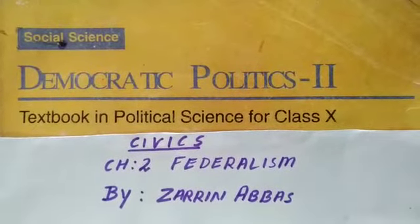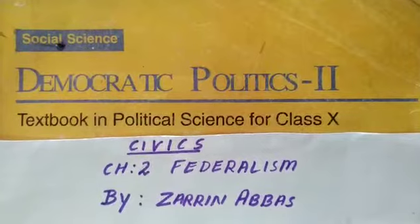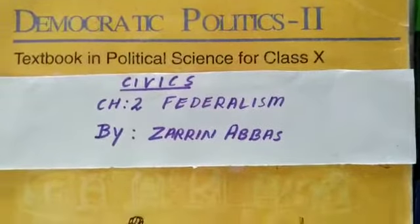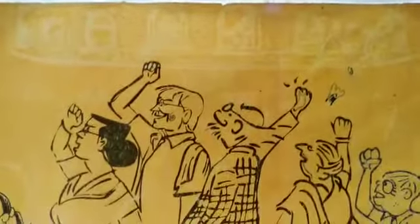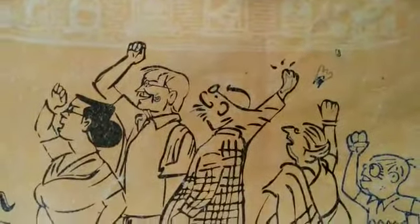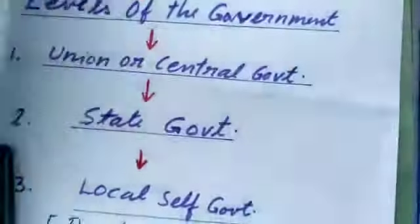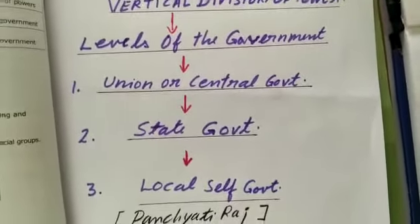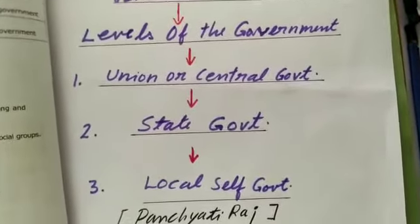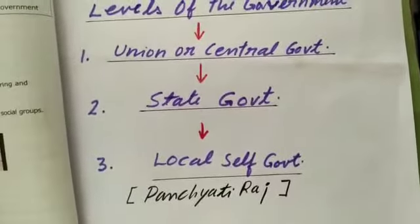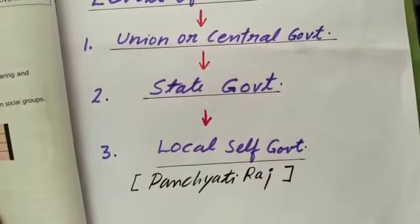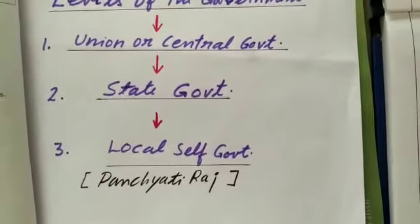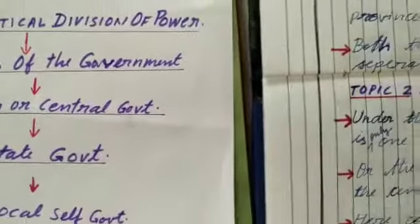Hello and welcome back. Today we are going to start with the second chapter of Civics. Do you remember the vertical division of power which we have done in the first chapter? Look at this flowchart again. As you can see here, in the vertical division of power, levels of the government are divided at three levels: Union or central government, state government, or local self-government. Commonly it is known as a federal system of government.